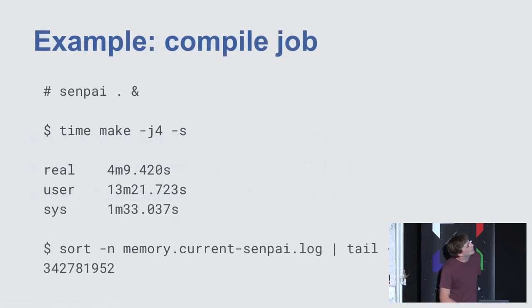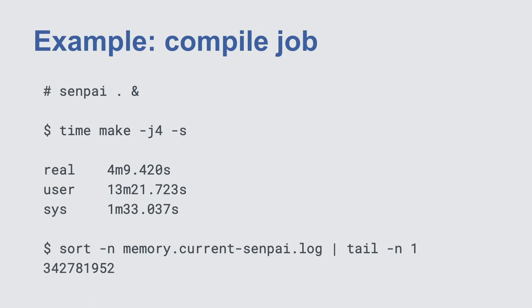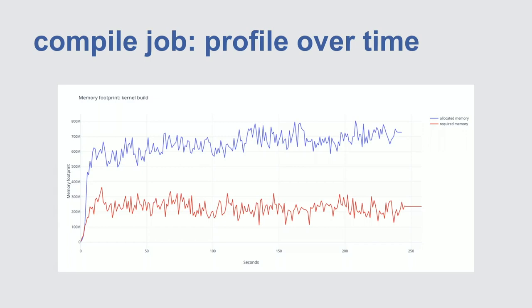Here's the same kernel compile job run with Senpai. The time is still around four minutes — I set it kind of aggressively so there's a couple extra seconds, but for most batch workloads you probably wouldn't care. As you can see from the memory.current recording, it takes about 335–340 megabytes. The blue line is the memory.current log for completely unconstrained kernel builds — you can see at the beginning it reads a bunch of data into cache that it never ends up using again. With the red line you see Senpai cutting away that memory that isn't needed for the duration of the workload.